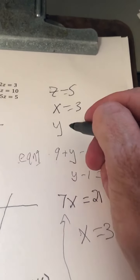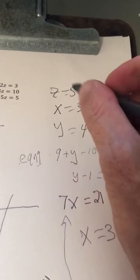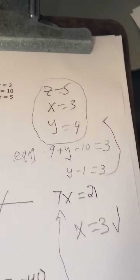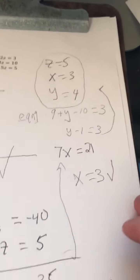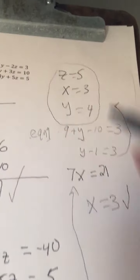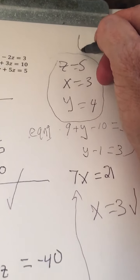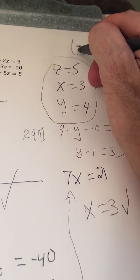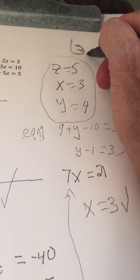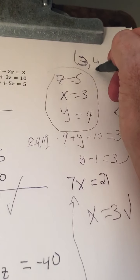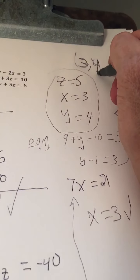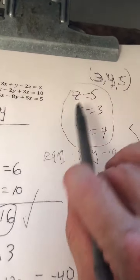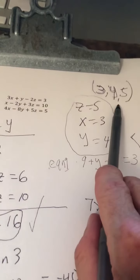So we have our values of x, y, and z. And what we normally do is write our answer as an ordered triple. So the ordered triple that satisfies this equation is 3, 4, 5. So in other words, we're saying x is 3, y is 4, and z is 5. So if you plug in 3, 4, 5 into all three equations, you'll get a true statement.